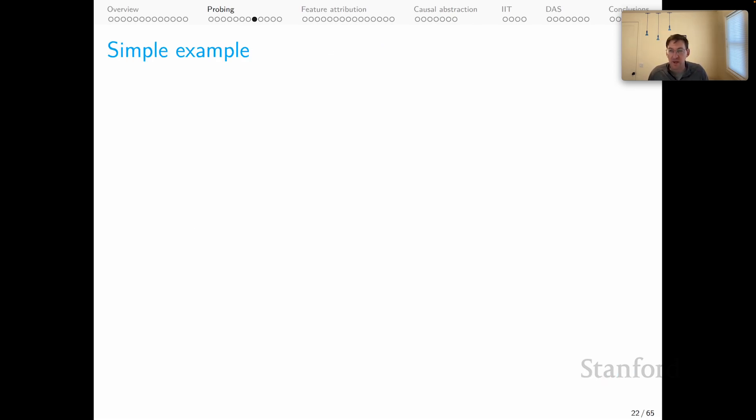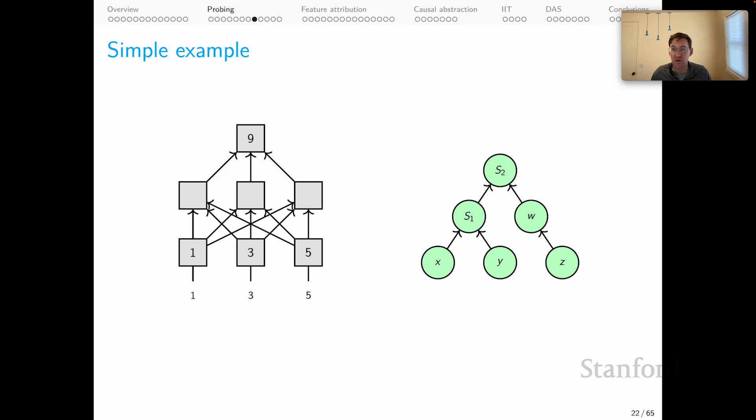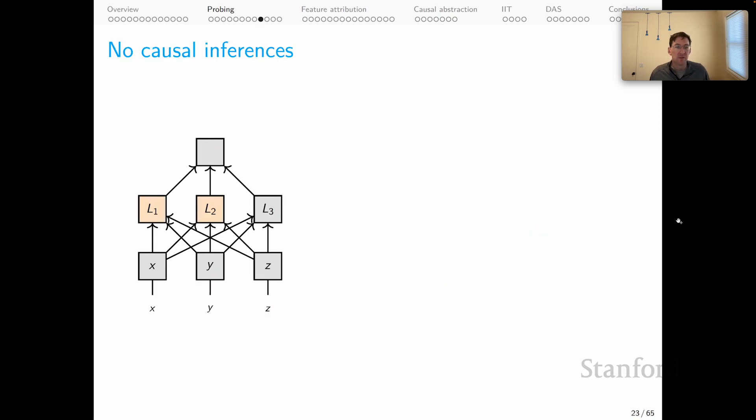Let's move now to the second concern I have, which is about causal inference. And to build this argument, let's use a simple example. We imagine that we have a small neural network that takes in three numbers as inputs and perfectly computes their sum. So when one, three, five comes in, it does its internal magic and it outputs nine. And we'll presume that it does that calculation perfectly for all triples of integers coming in. The question is, how does it manage this feat? How does this model work? You might have a hypothesis that it does it in a kind of compositional way where the first two inputs, X and Y, come together to form an intermediate variable S1. The third one is kind of copied into an internal state W. And then S1 and W are modular representations that are added together to form the output representation. That's a hypothesis about how this model might work. And now the question is, can we use probing to reliably assess that hypothesis?